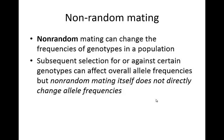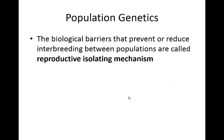So it's basically going to cause a subsequent selection for or against different genotypes that can affect overall allele frequencies. There are biological barriers that may prevent or reduce interbreeding between populations, and these would be called reproductive isolating mechanisms. Imagine a population on one island and a population on another island — they weren't able to build a boat to get over, and that would be a biological barrier preventing interbreeding.